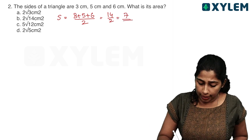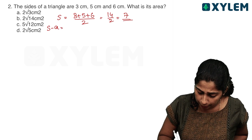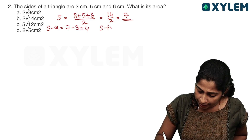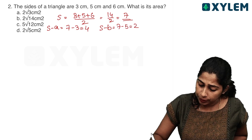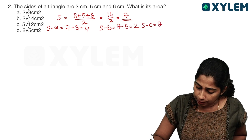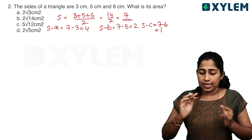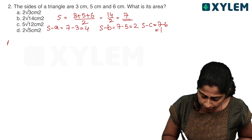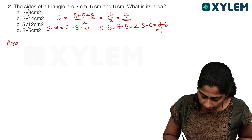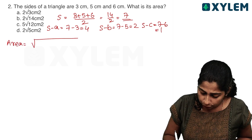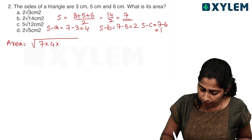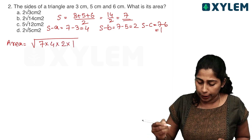Area is equal to the root of S into (S minus A) into (S minus B) into (S minus C). That is root of 7 into 4 into 2 into 1.